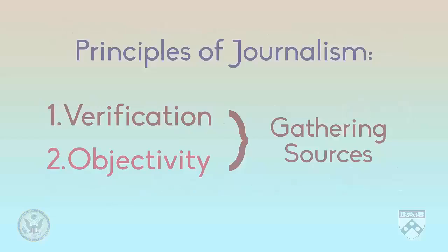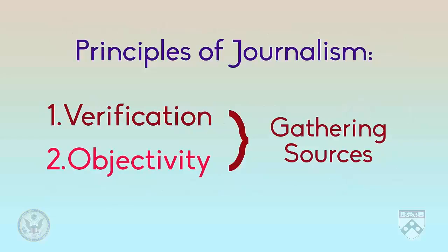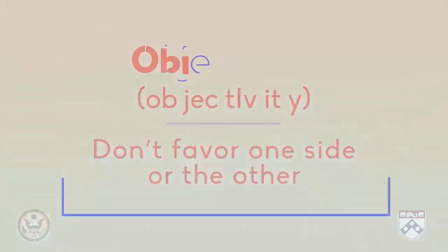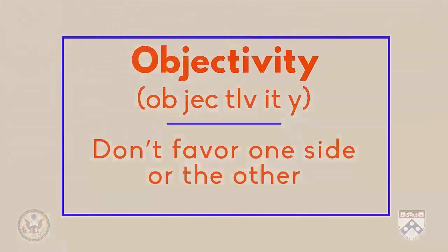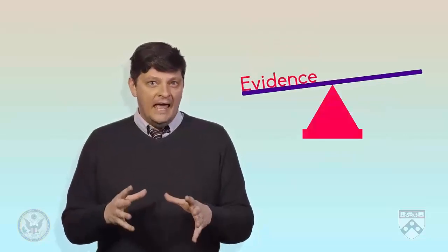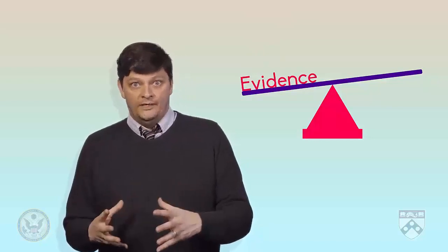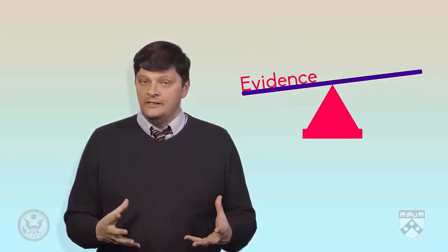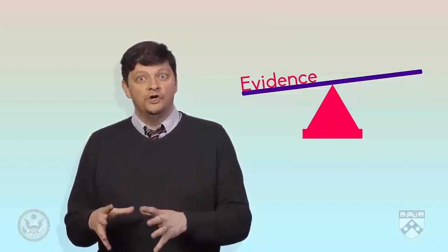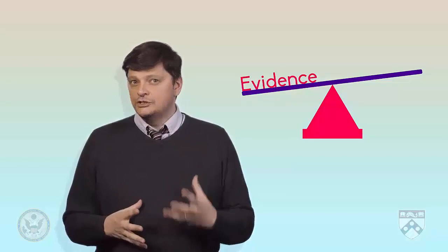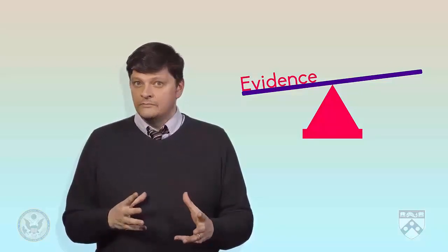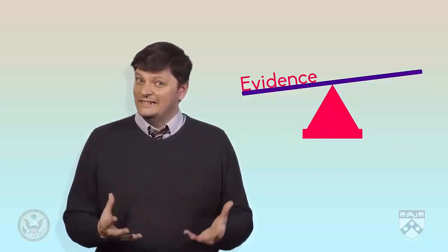The second principle is objectivity. This means reporting the facts without favouring one side or another. However, objectivity can be difficult to define. A journalist must think about the weight of evidence, meaning that they should gather many sources, and if most sources say one thing and very few say the other, they should give more importance to the majority view. A journalist should not give equal time or weight to an opinion based on facts that are clearly not true.